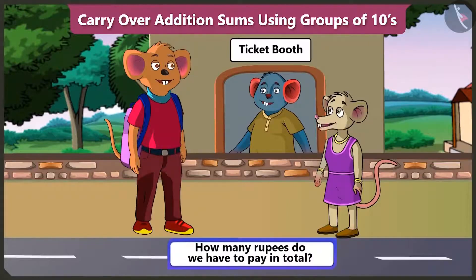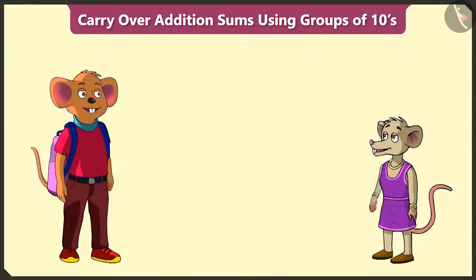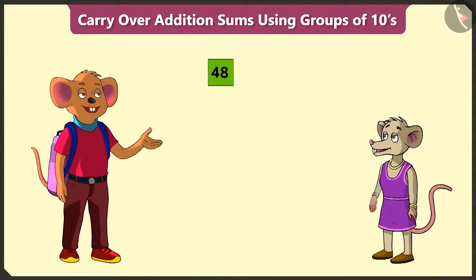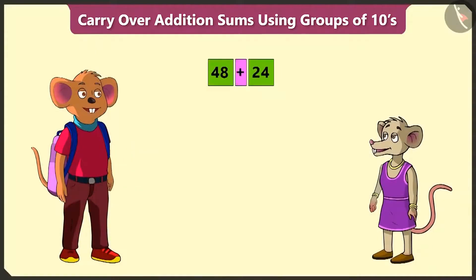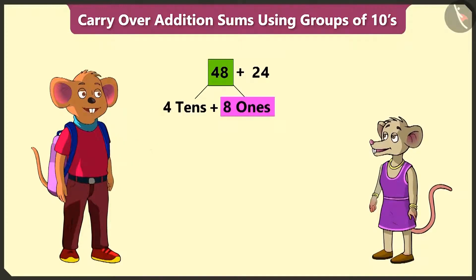How many rupees do we have to pay in total? We have to add 24 to 48. How do we do that? 48 is 4 tens and 8 ones.